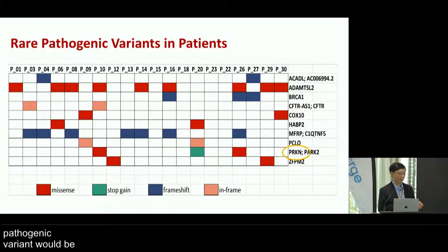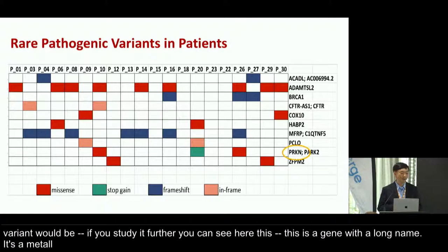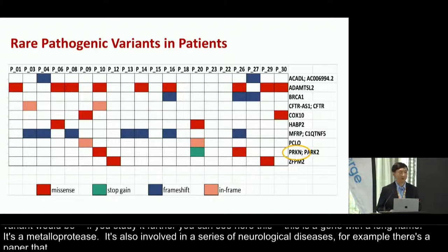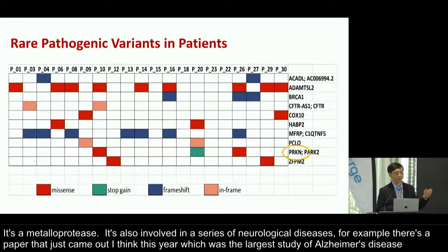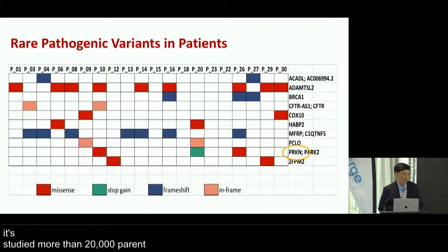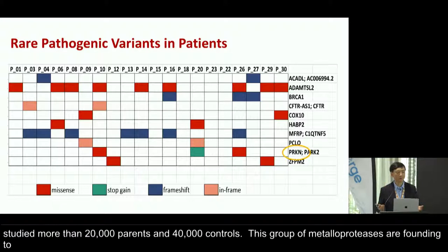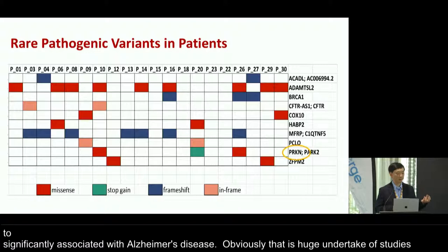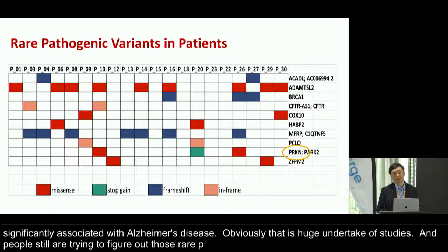We also see ADAMTSL2, a metalloprotease gene known to be involved in neurological diseases. A paper that just came out — the largest study of Alzheimer's disease with more than 20,000 patients and 40,000 controls — found this group of metalloproteases to be significantly associated with Alzheimer's disease. People are still trying to figure out rare pathogenic variants for neurological diseases like Alzheimer's, so for CFS we obviously need a lot more work to get a definitive answer.